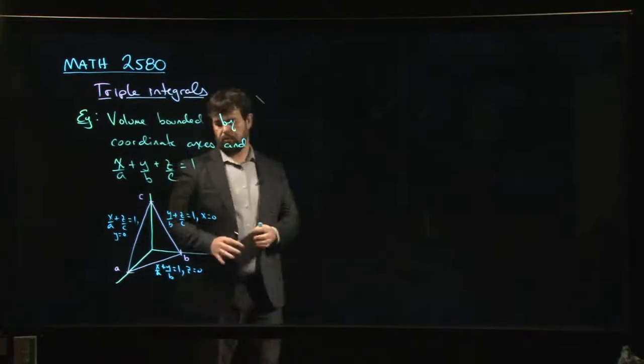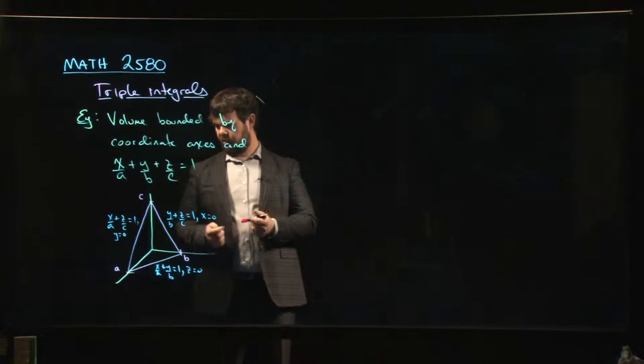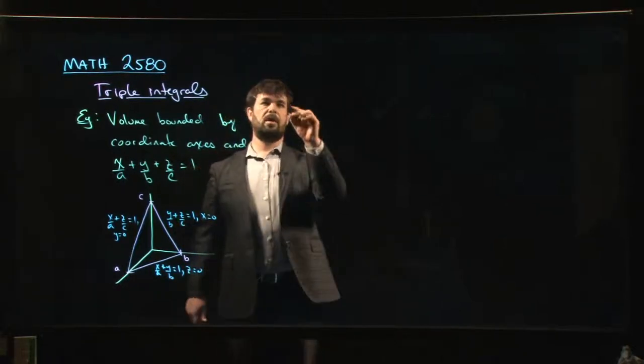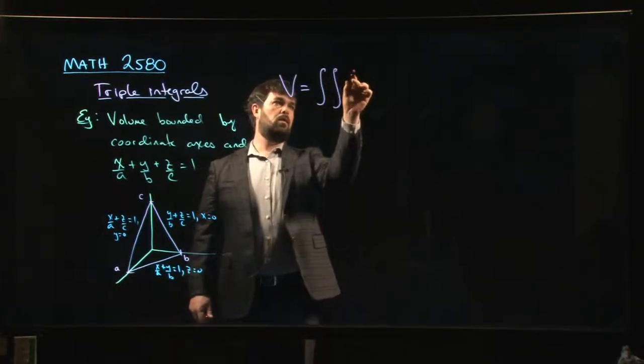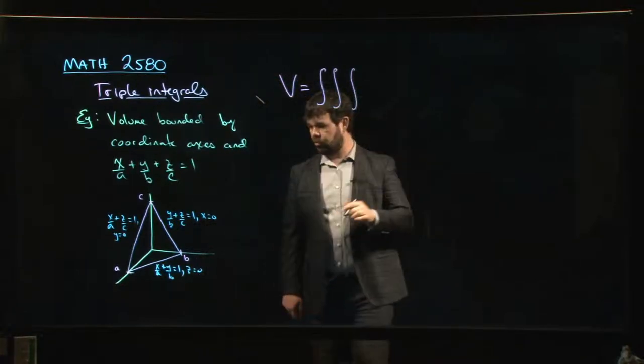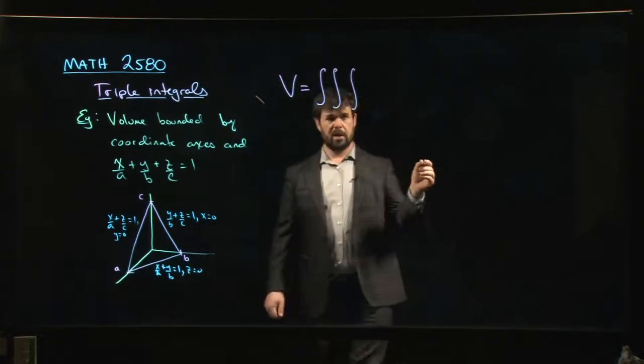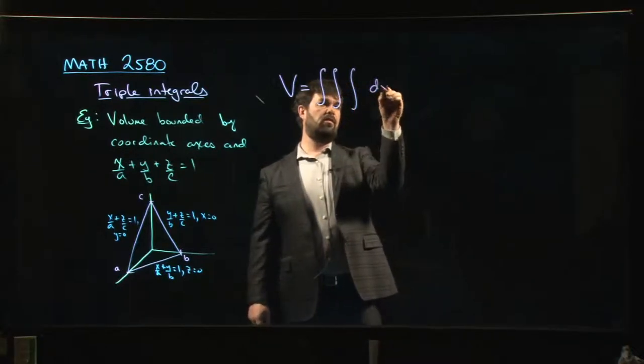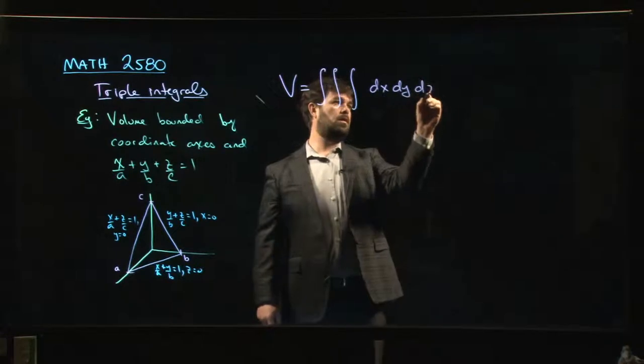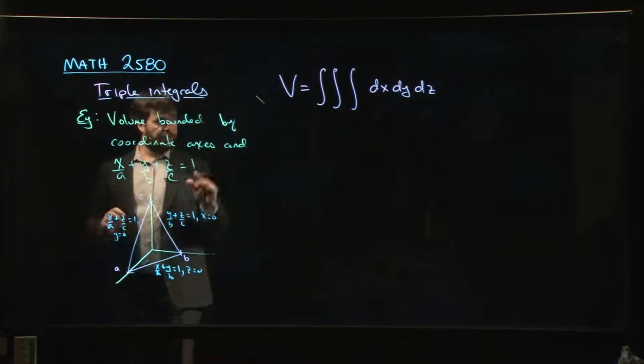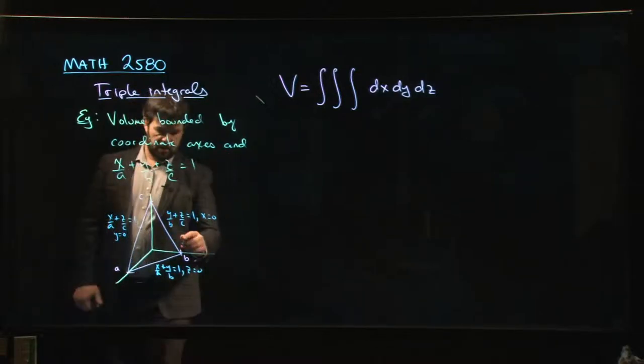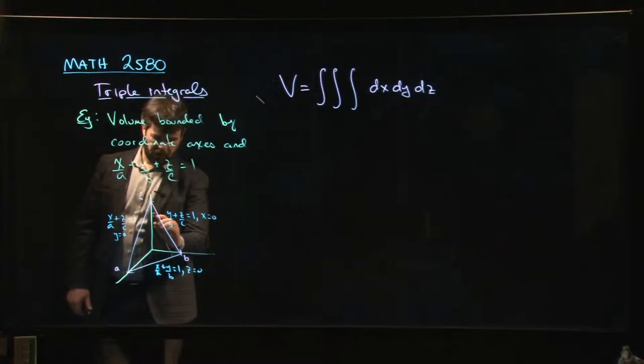So let's say the volume is going to be, so we want to do this as an iterated integral. And let's just choose an order. Maybe we'll go alphabetical order first because that seems like a natural thing to write down. So dx, dy, dz. So if I want to do it that way, what am I going to have to do? Well, that means that I'm first integrating with respect to x. So if I'm first integrating with respect to x, that means that my region of integration has to be this one here.